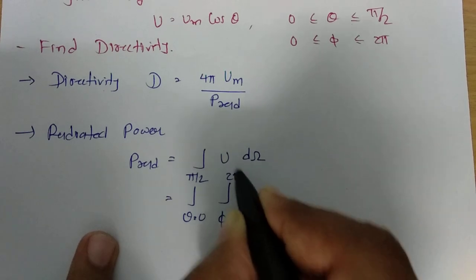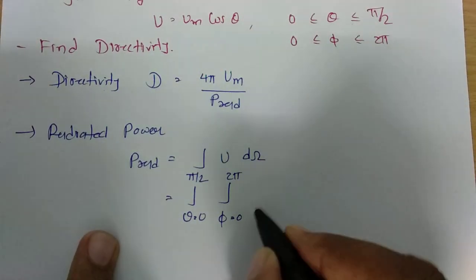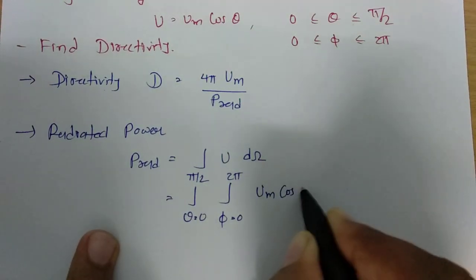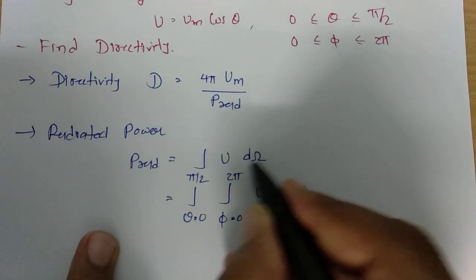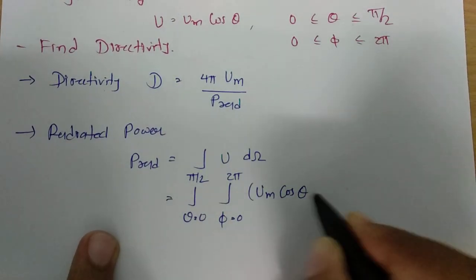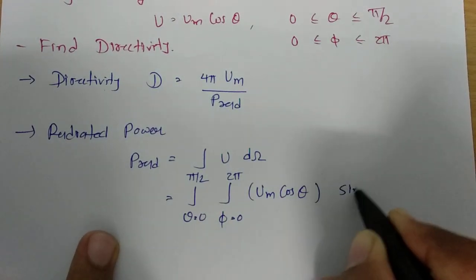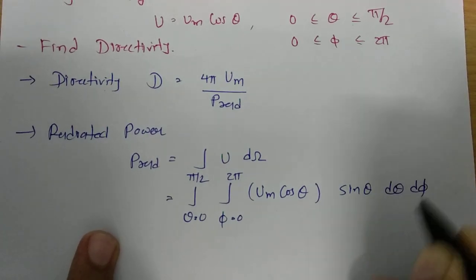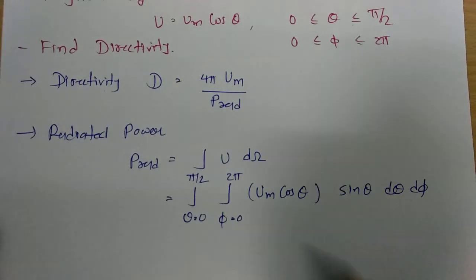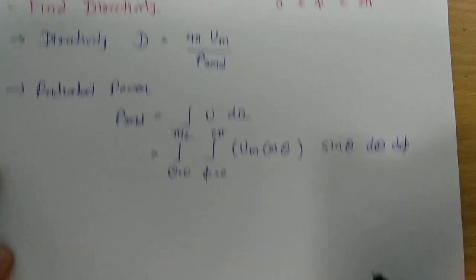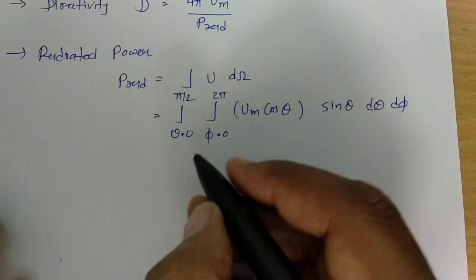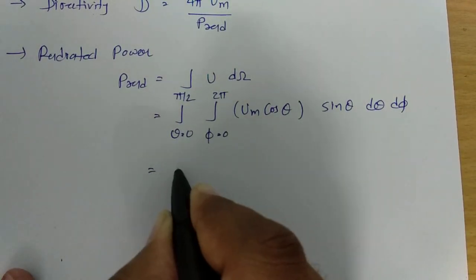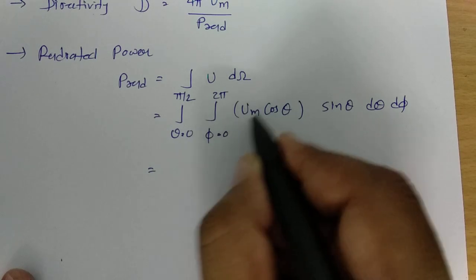Setting up the integral: θ varies from 0 to π/2 and φ varies from 0 to 2π. The radiation intensity is Um·cos(θ), and the solid angle element is sin(θ)·dθ·dφ.